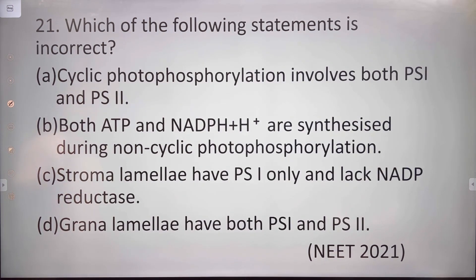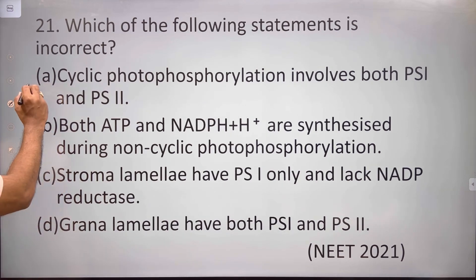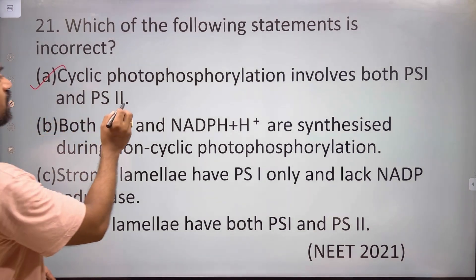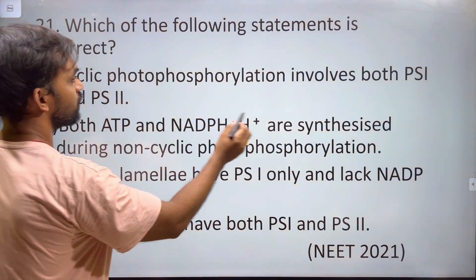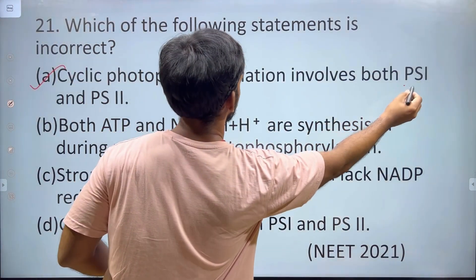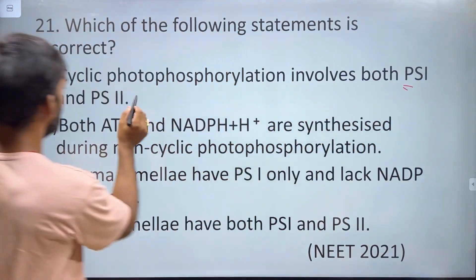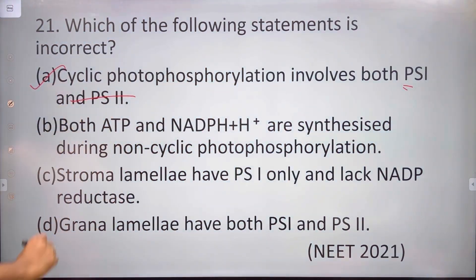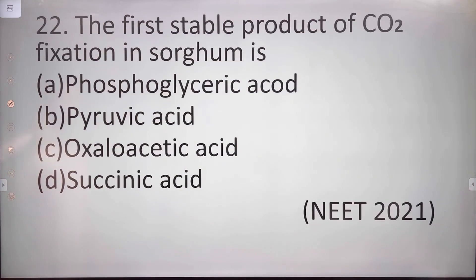Which of the following statements is incorrect regarding cyclic photophosphorylation? Cyclic photophosphorylation involves only PS1, not both PS1 and PS2. So the statement that both PS1 and PS2 are involved is incorrect. The correct statement is that cyclic photophosphorylation involves only PS1.